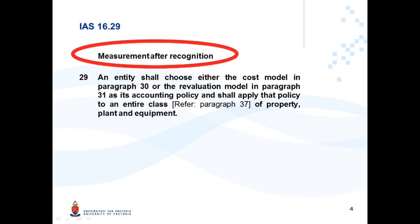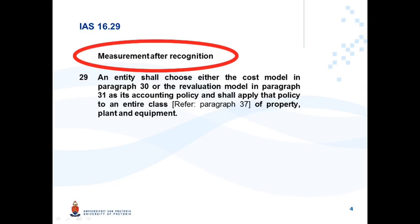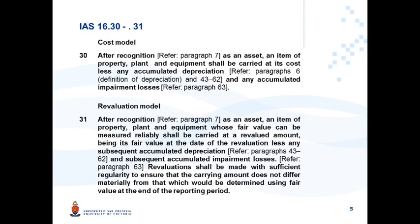Paragraph 29, headed 'Measurement after Recognition', refers to subsequent recognition. An entity shall choose either the cost model in paragraph 30 or the revaluation model in paragraph 31 as its accounting policy, and shall apply that chosen policy to an entire class of property, plant and equipment.